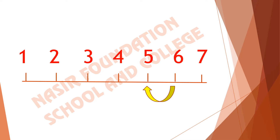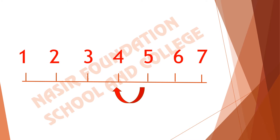What comes before 5? Before 5 the next number is 4. If we move backward we can see that 4 is placed on the number line. So, before 5 it comes 4. And what comes before 4? It comes 3. The previous number is 3.